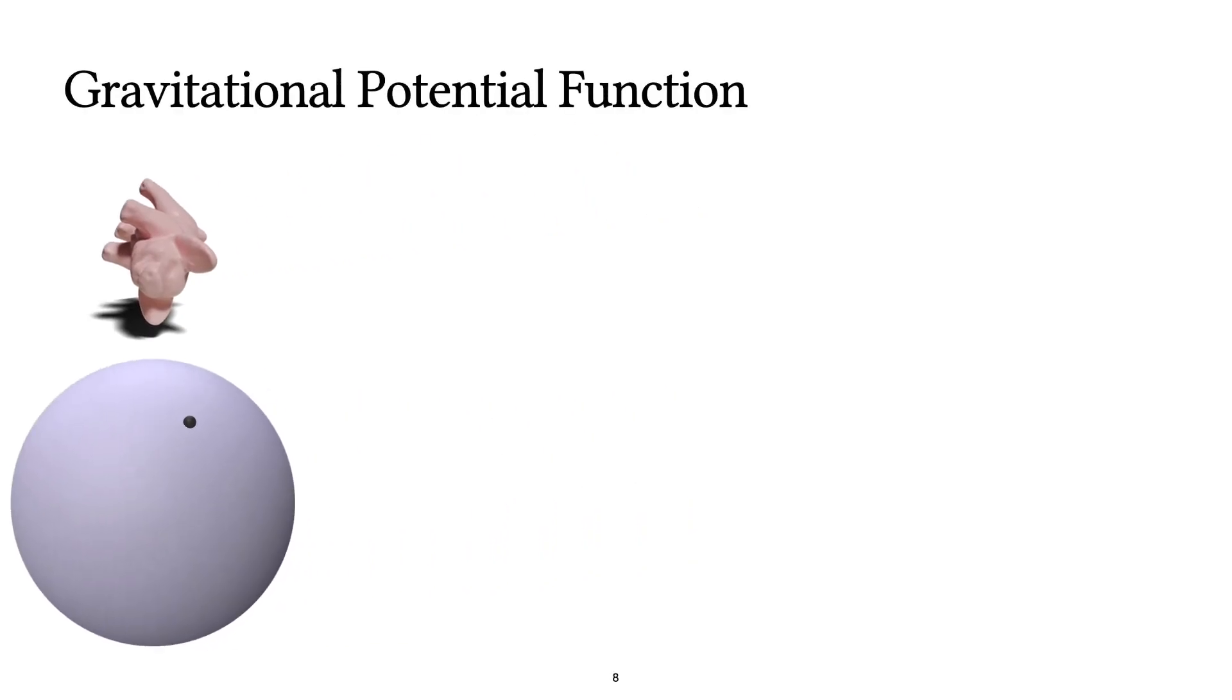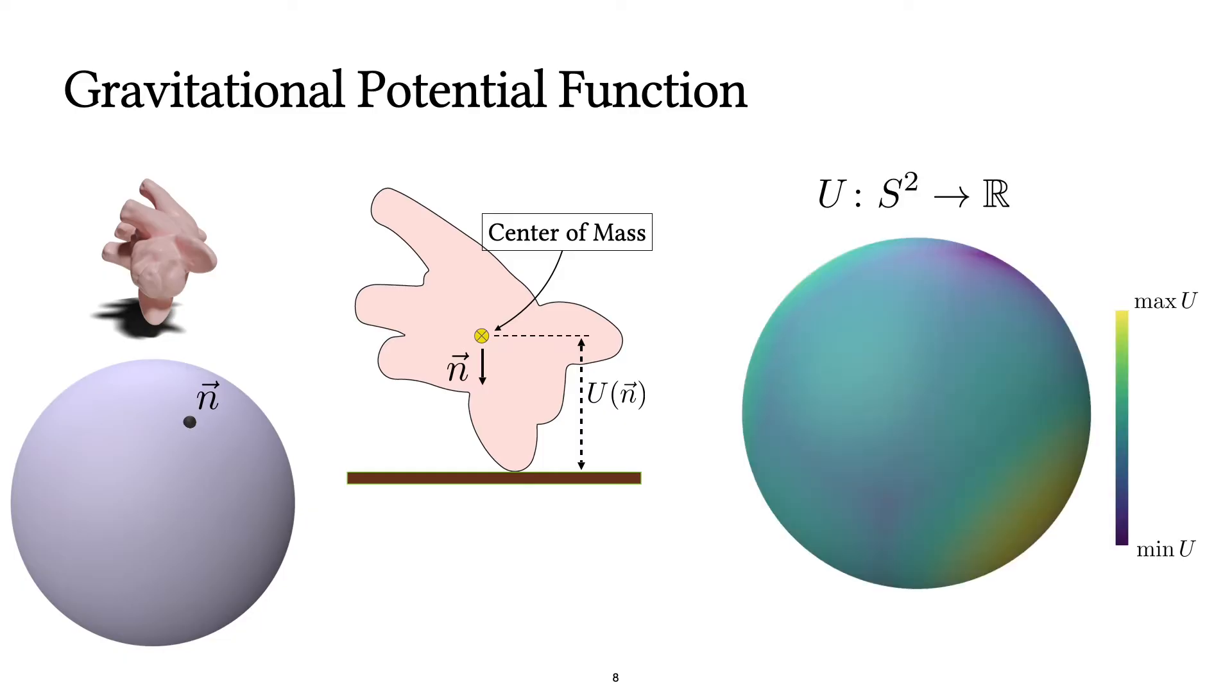Then, to understand how the shape falls and rolls on the ground, we assign a function to each of these orientations. This function measures the potential energy of the object and it is the distance of the center of mass to the ground when the shape is touching the ground. Then if we measure this potential energy at every orientation, we end up with a continuous function on the unit sphere.